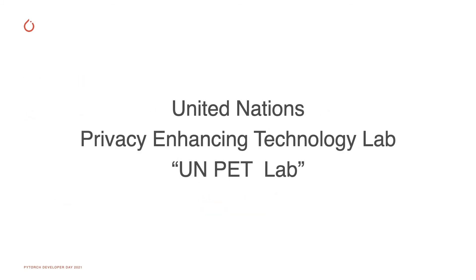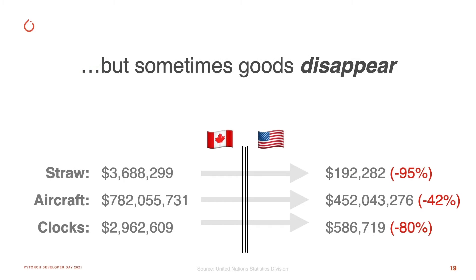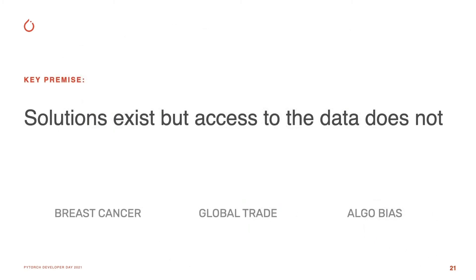This use case comes from the United Nations Privacy Enhanced Technology Lab, or PET Lab — a new body piloting many of the technologies we're discussing today. Specifically, they're looking at a trade-related use case. Canada and the United States each measure the amount of goods going over their shared border, but sometimes these records don't match — Canada has a record of goods supposedly going to the United States, but the US has no record of having received them. The UN PET Lab project is working with five different UN member nations to collaborate on their shared data resources to understand how goods are flowing, without having to centralize those data assets into one location.